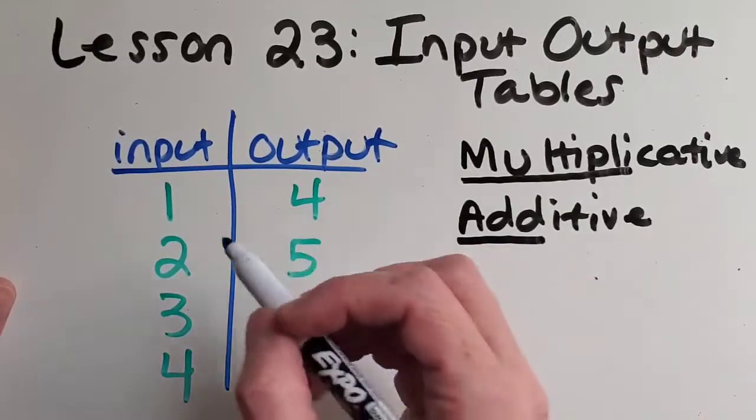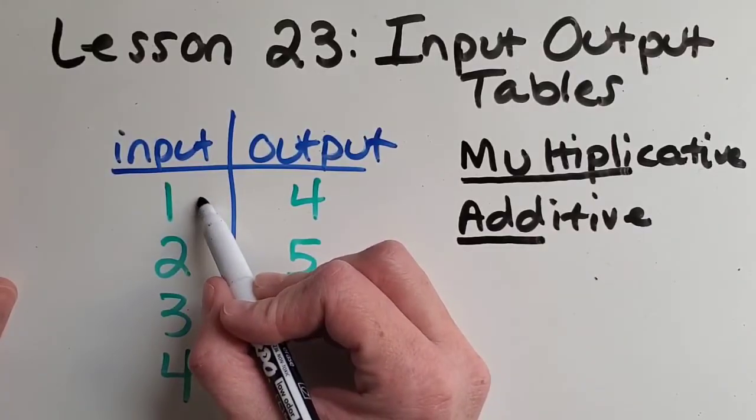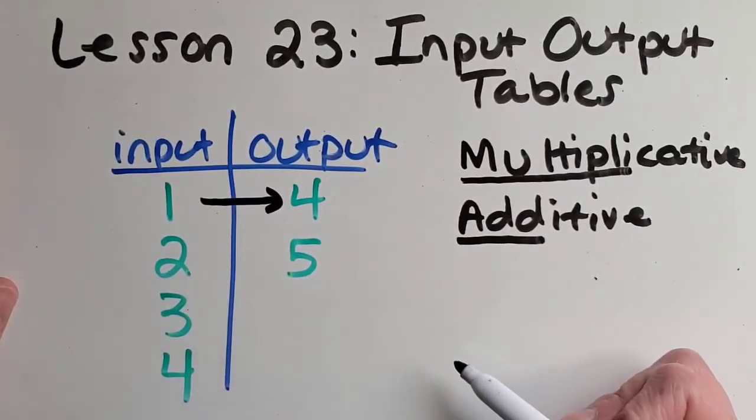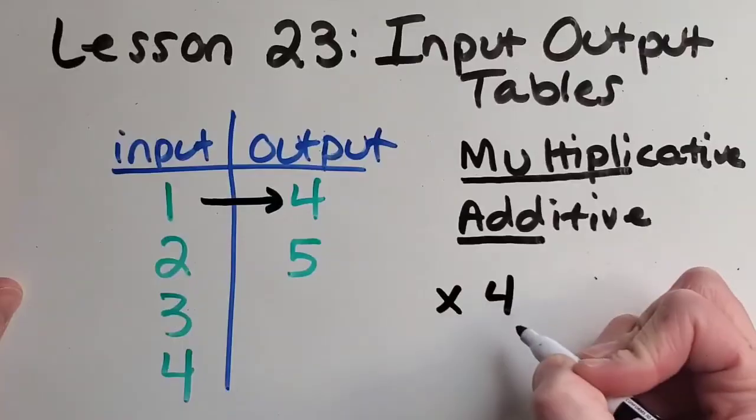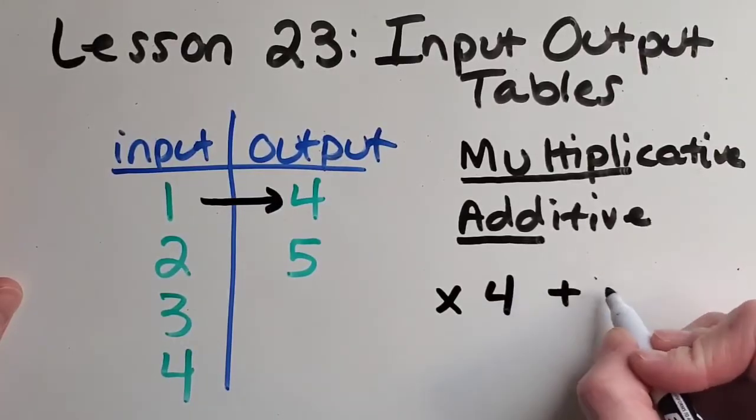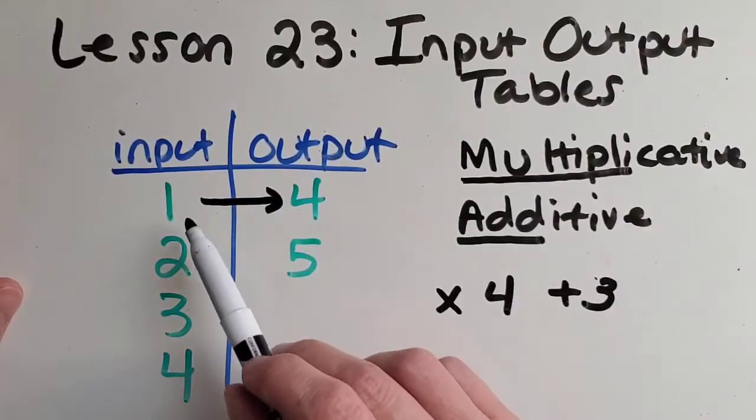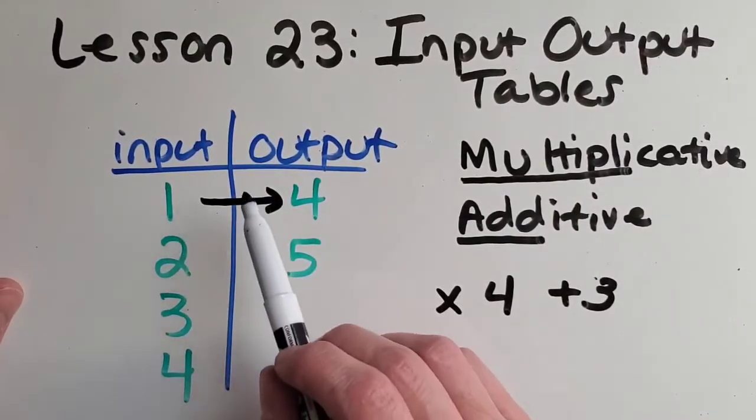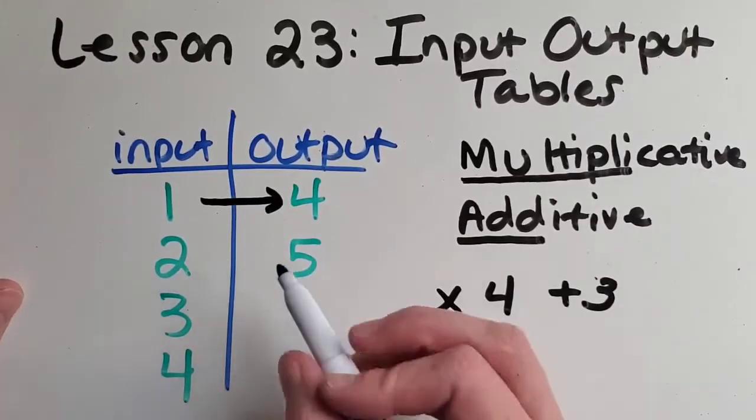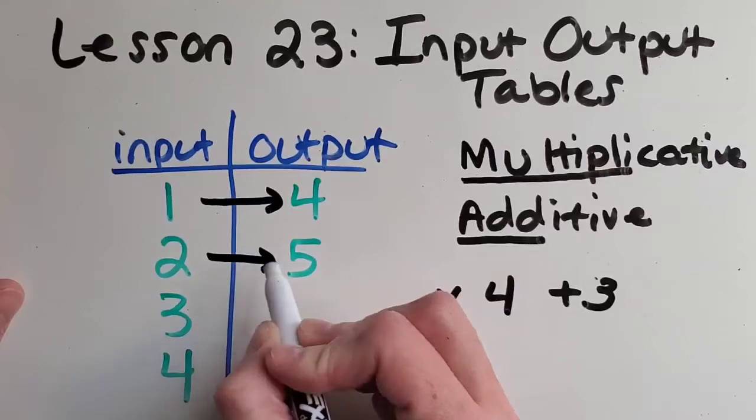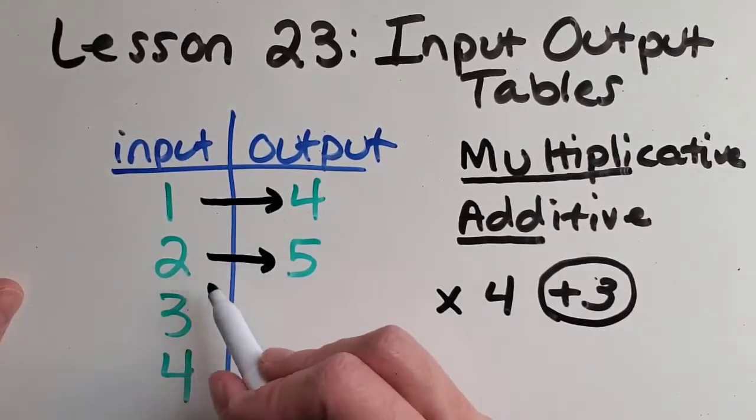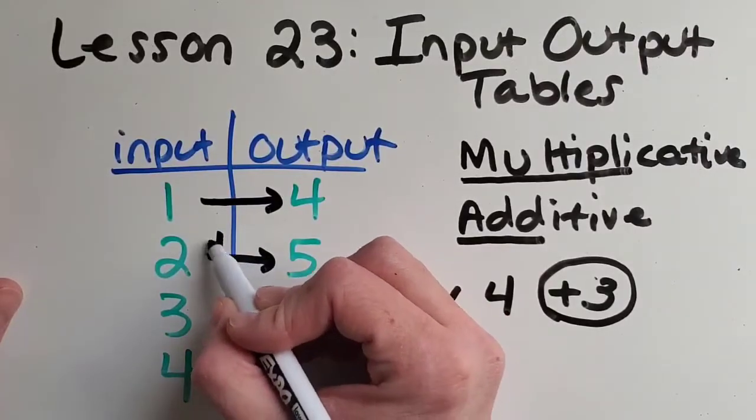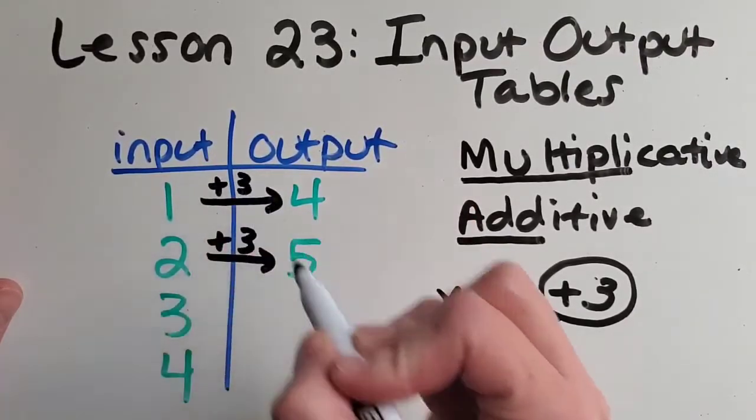Now let's check for a rule. We're going from one to four again. So it could be times four. I'm going to write down some of the options here. Or it could be plus three. Because one times four is four, and one plus three is also four. So really, the best test is to check the next line. How do you get from two to five? Great. It's this plus three. Because two times four is too big, that would be eight. So it must be the plus three.